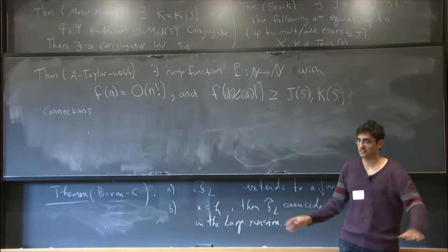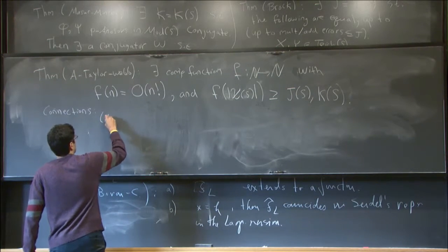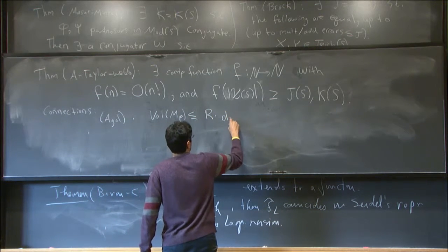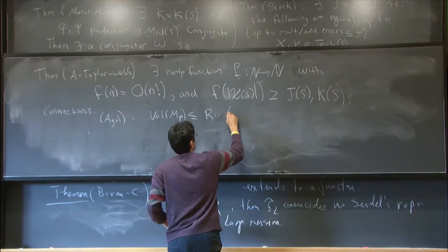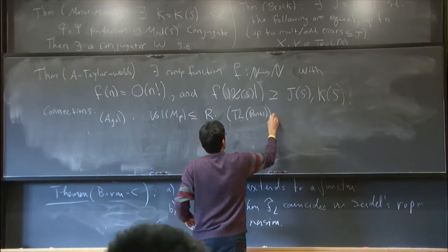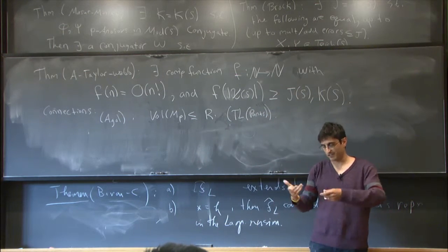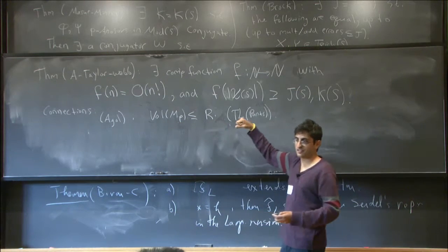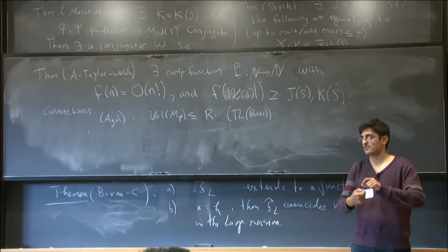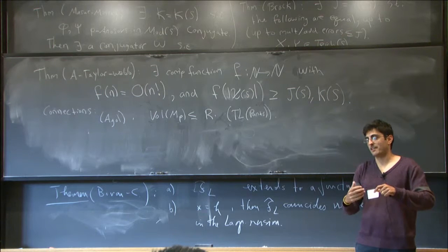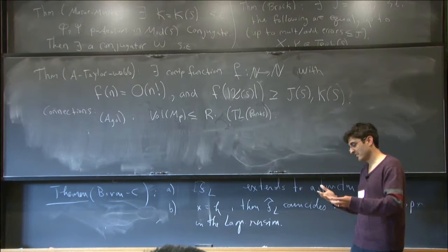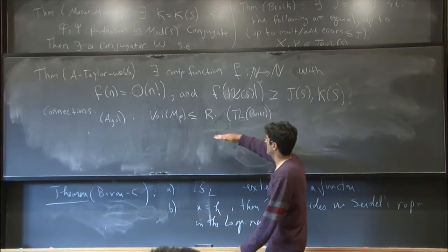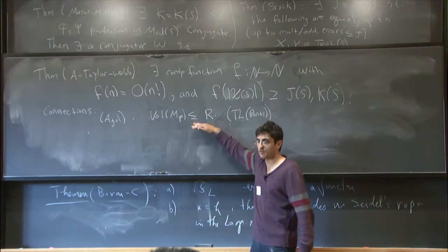Agol tells you that the volume of a mapping torus is at most some uniform constant R times the translation length in the pants graph. R is essentially the volume of a regular ideal octahedron. You take your mapping torus, take a path in the pants graph realizing the translation length, look at all the curves on that path, drill them out of your manifold, and explicitly realize the result by gluing together octahedra mirroring the moves in the pants graph. Putting the drilled curves back only makes the volume smaller, so this still works.